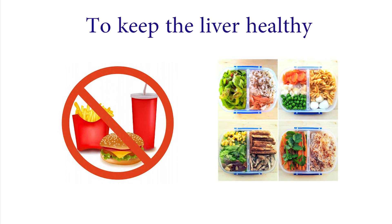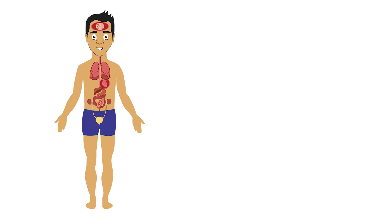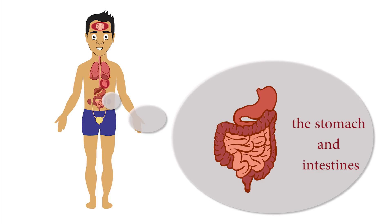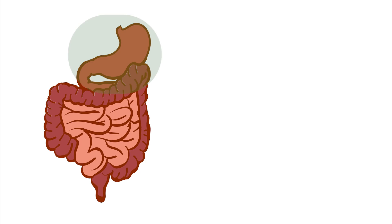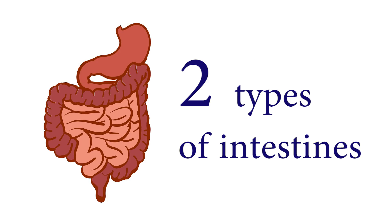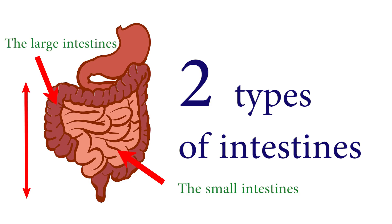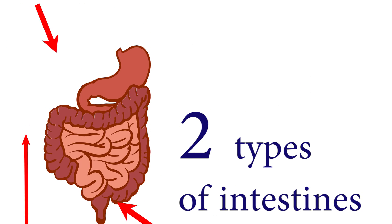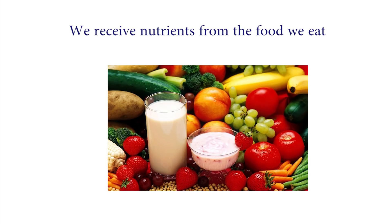Next is the stomach and intestines. The stomach is a muscular, elastic, pear-shaped bag lying crosswise in the abdominal cavity. We have two types of intestines: the small and big intestines. They are located between the stomach and the anus. These are the organs that enable our bodies to receive nutrients from the food we eat.